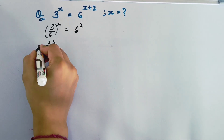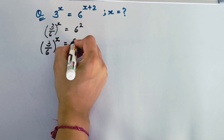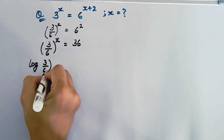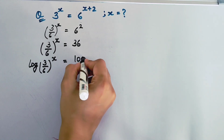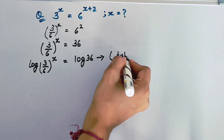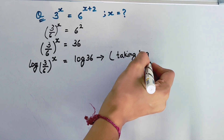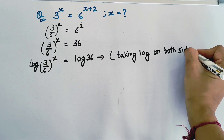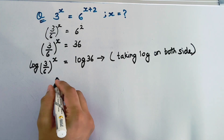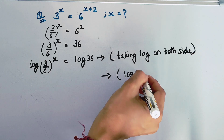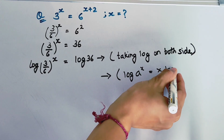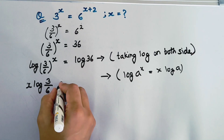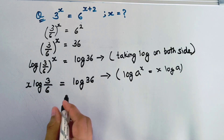Now we will take log on both sides. So, log of 3 by 6, whole to the power x, equals log 36. Applying the log power rule — log a to the power x equals x log a — we get x log 3 by 6 equal to log 36.